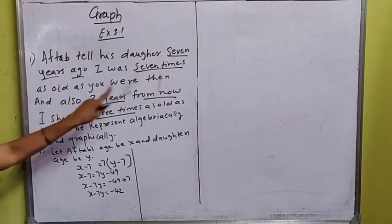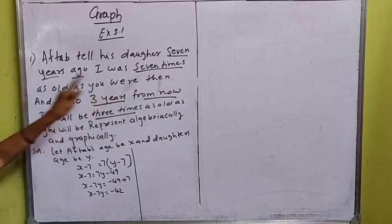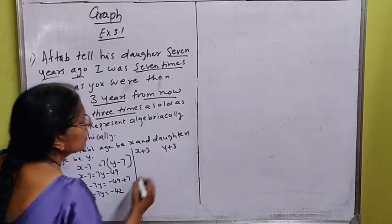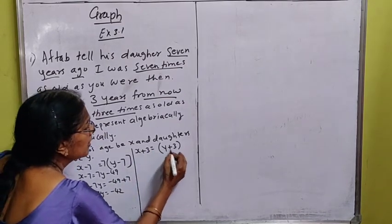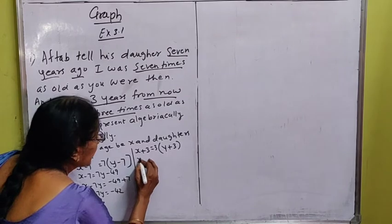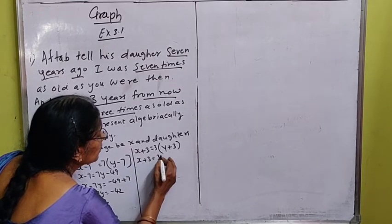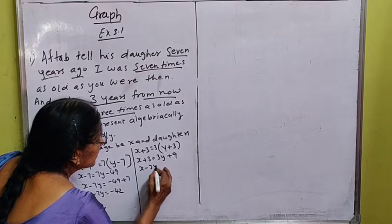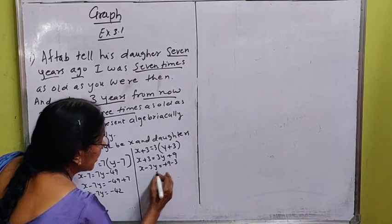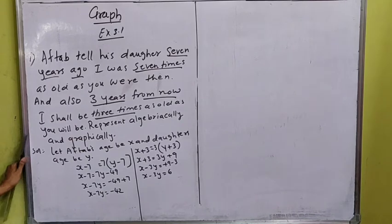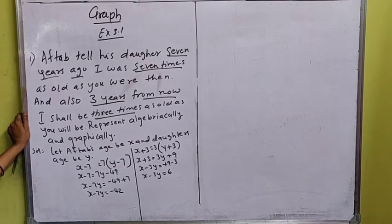Three years from now, we add 3 to both ages. Aftab will be 3 times the daughter's age: X + 3 = 3(Y + 3), giving X + 3 = 3Y + 9. So X − 3Y = 9 − 3, which gives X − 3Y = 6. We now have two equations: X − 7Y = −42 and X − 3Y = 6.